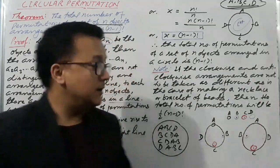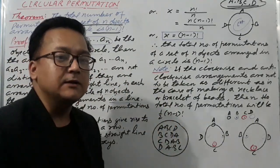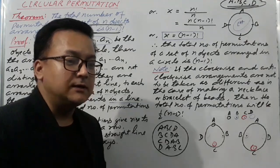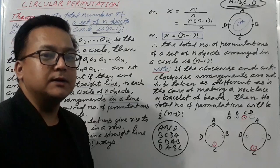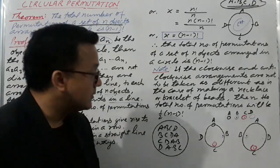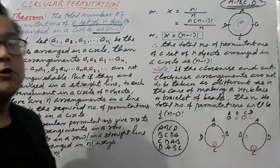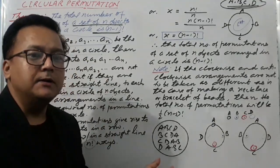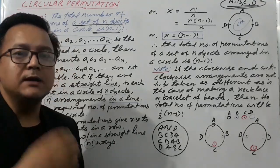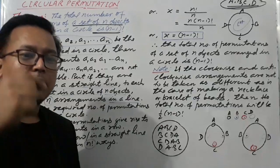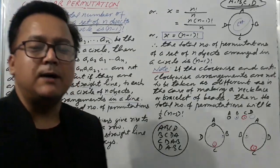So, to recap: if clockwise and anticlockwise arrangements in a circle are not distinguishable — especially in the case of a bracelet or a necklace — at that time we use half of (N−1) factorial to find the number of arrangements. I think you are now clear about this theorem. I will make another video on very important questions of circular arrangements. Thank you very much, bye-bye!